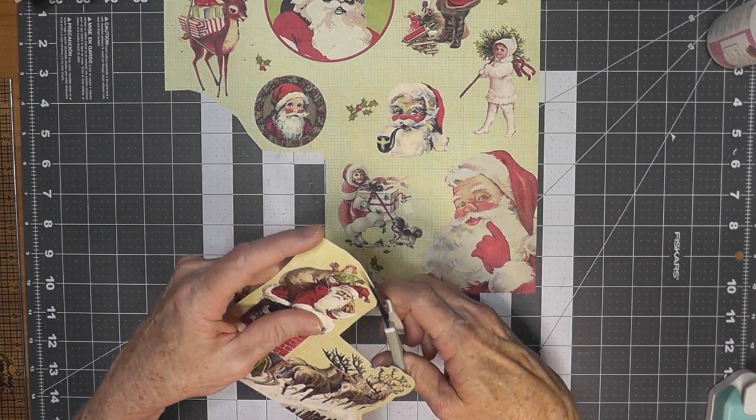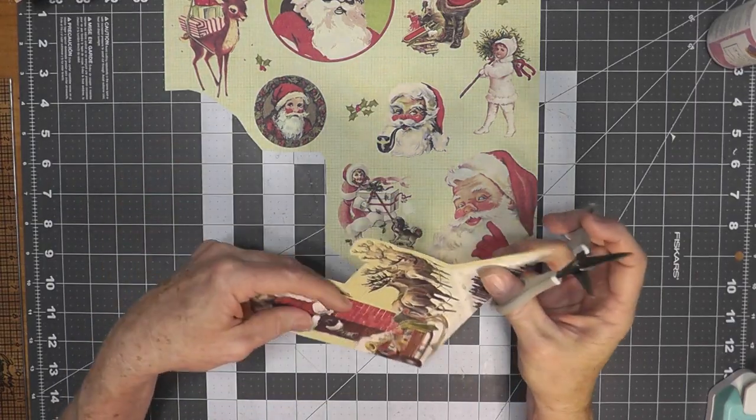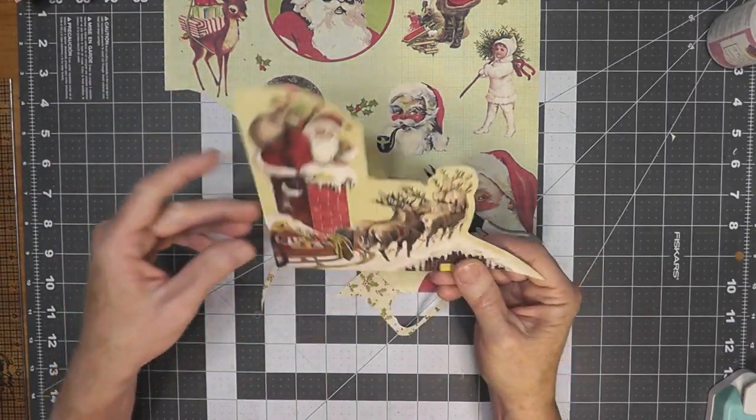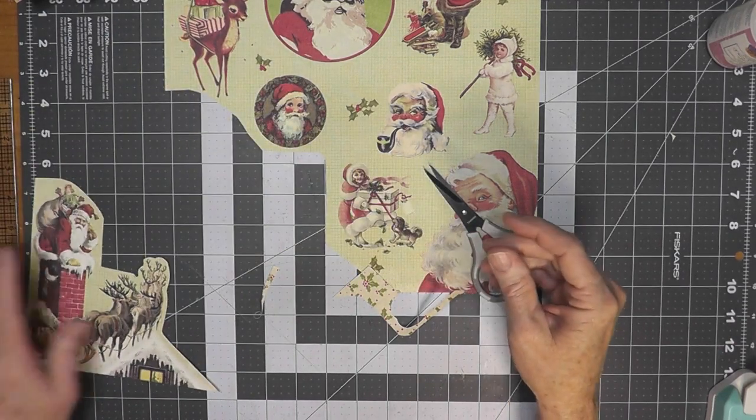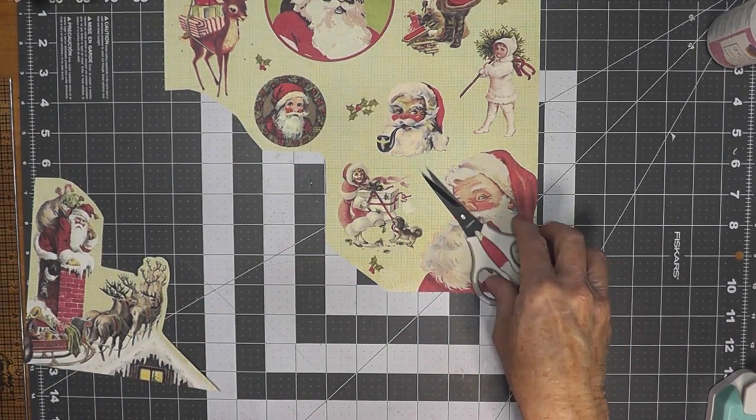I know I used this one, and then I used the little girl with the dog, a couple of the Santas, the reindeer with the packages, and the little girl with the tree, and the Santa in the circle is the one that I used for the front cover. So I'm going to go ahead and speed this up now to save some time.